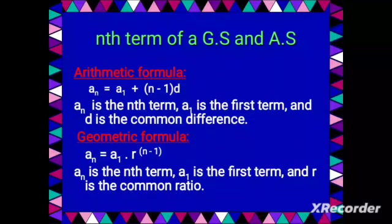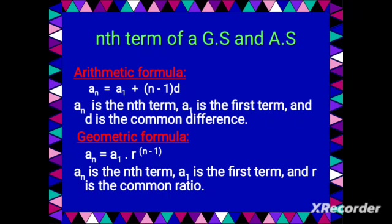Let's look at another aspect of comparison — we will compare the geometric sequence and arithmetic sequence based on their nth term. The nth term of an arithmetic sequence is: a plus (n minus 1)d, where a is the first term and d is the common difference. On the other hand, the nth term of a geometric sequence is: a times r raised to the power (n minus 1), where a is the first term and r is the common ratio.